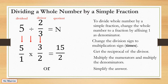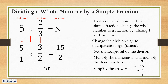Then simplify the answer if possible. The answer 15 over 2 is an improper fraction, so we divide the numerator by the denominator: 15 divided by 2 equals 7 remainder 1. The quotient becomes the whole number, the remainder becomes the numerator, and we copy the denominator 2 — so the answer is 7 and 1 half.